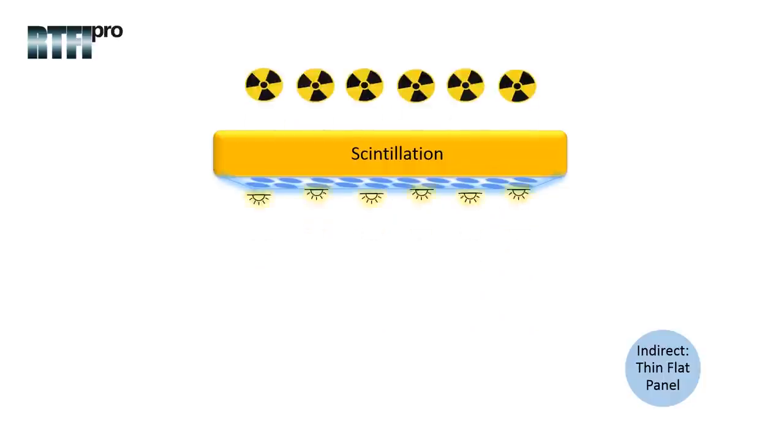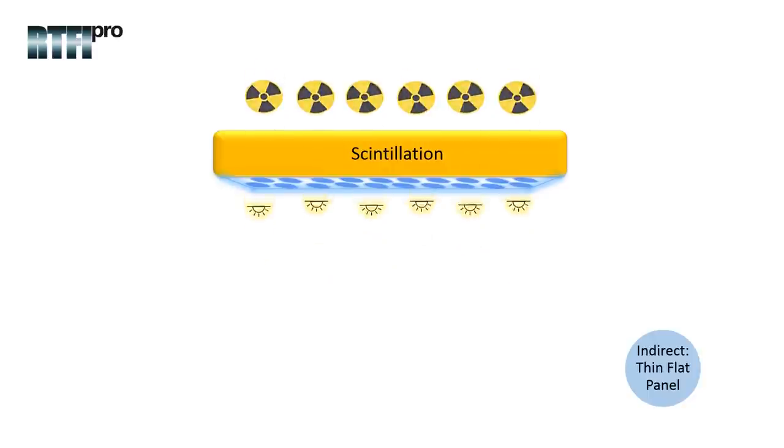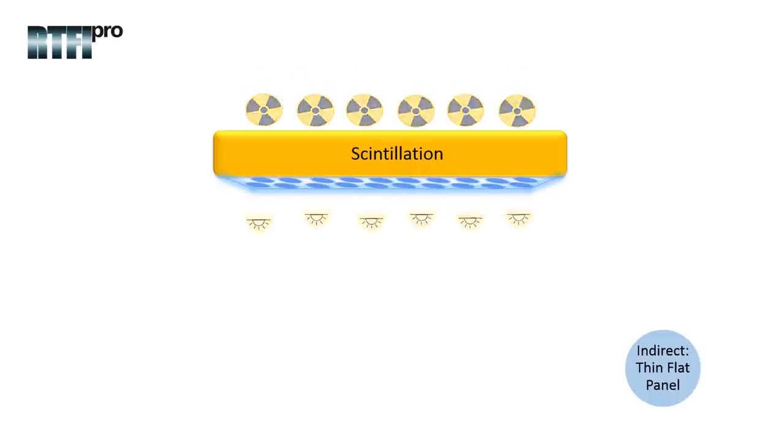The distribution of light in all directions, known as isotropic diffusion, does have a negative impact as it decreases the spatial resolution because the size of the converted light photons are larger in size than the incoming x-ray photons, which result in a small definition loss within the image.